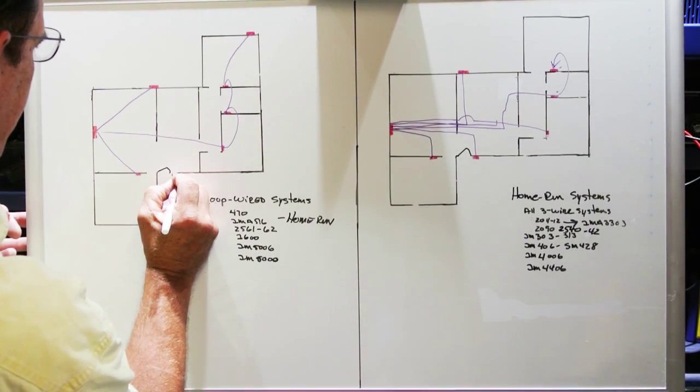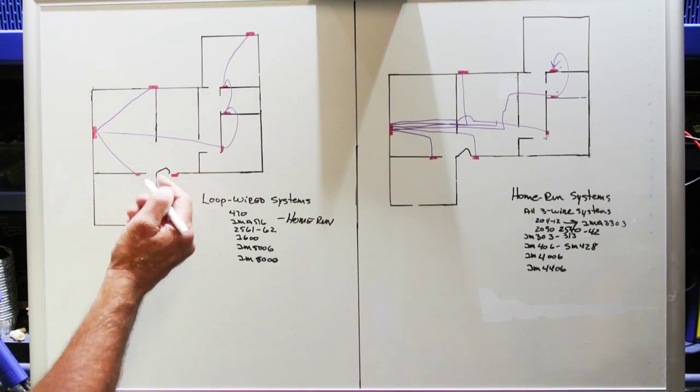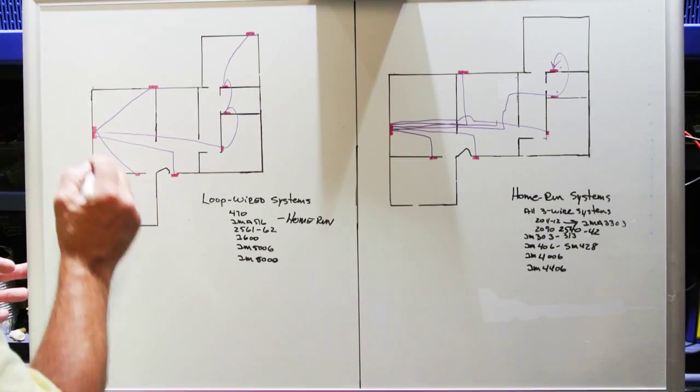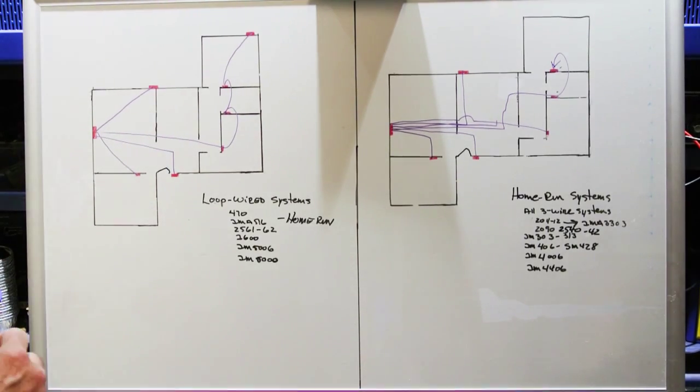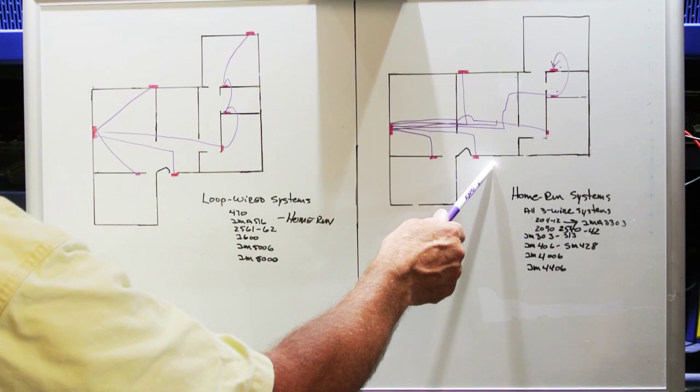Also, we need to put back in our front door speaker. Front door speakers on all Nutone intercom systems are always home run back to the master. That goes across both types of wiring schemes when you do this. So it's important to understand the difference between loop wired and home run systems.